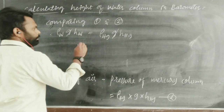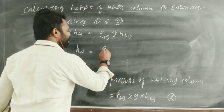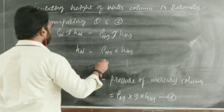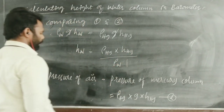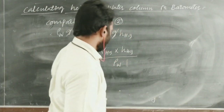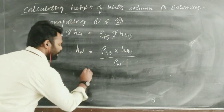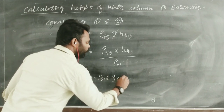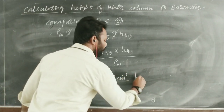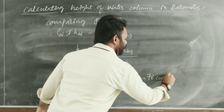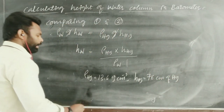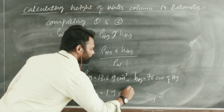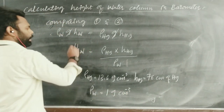So the height of water column equals density of mercury multiplied by height of mercury column, divided by density of water. We know the values: density of mercury is 13.6 g/cm³, height of mercury column is 76 cm, and density of water is 1 g/cm³.